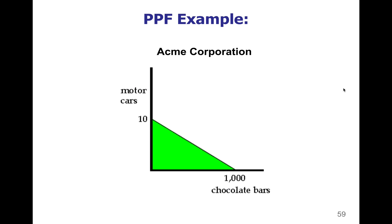Here's an example. A production possibility frontier or curve is a simple graph that shows exactly what the title says — the production that's possible. For this example, the title of the graph is Acme Corporation, so this is telling you that this is one corporation's production that's possible. Each of the two axes are going to be labeled with one of two different goods or services that this company could provide.